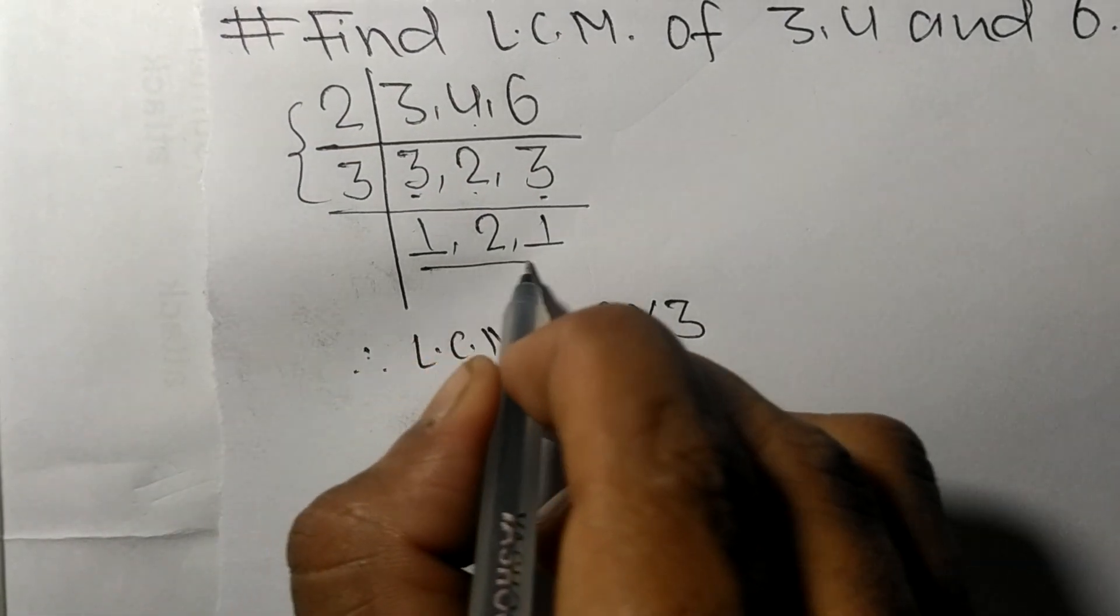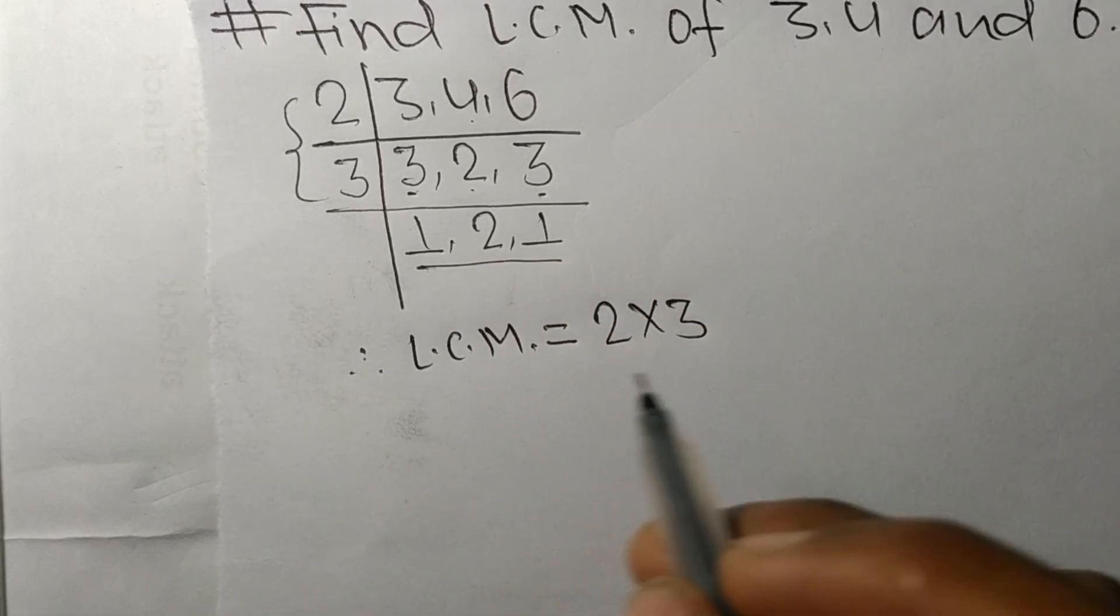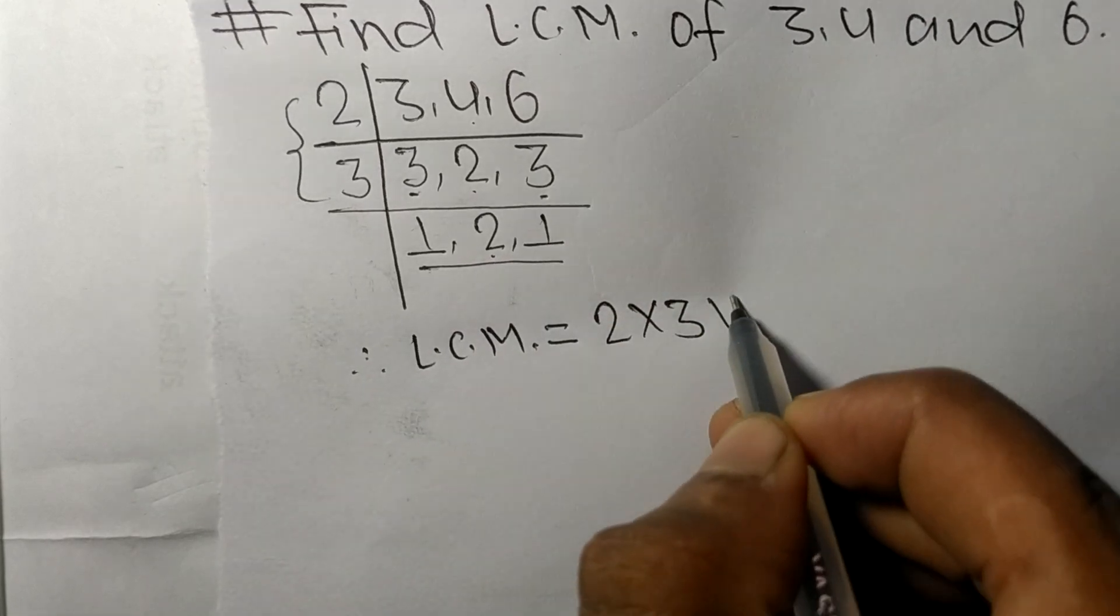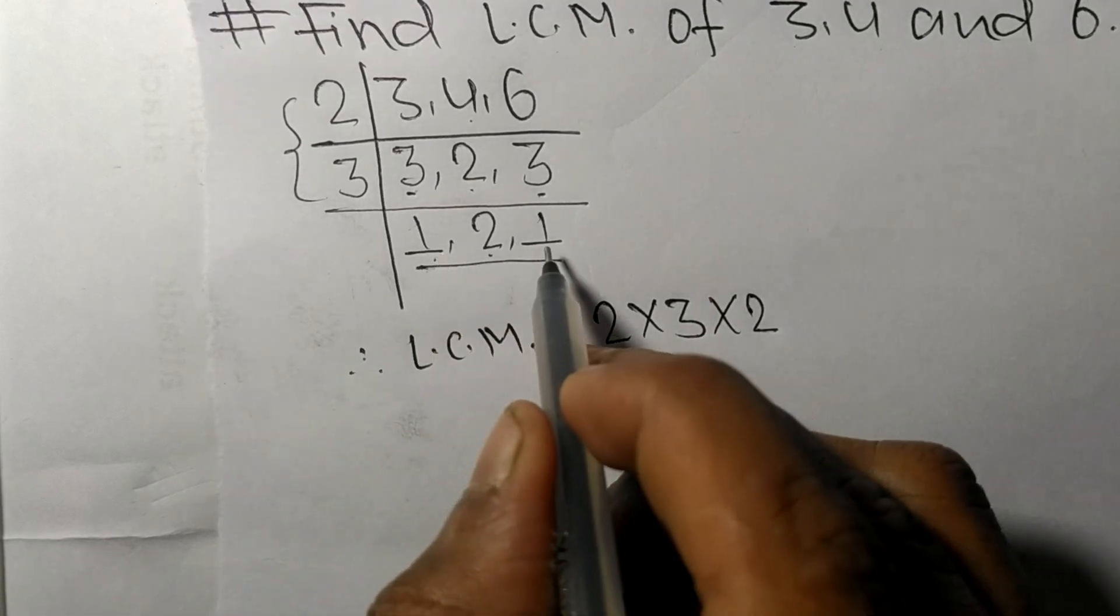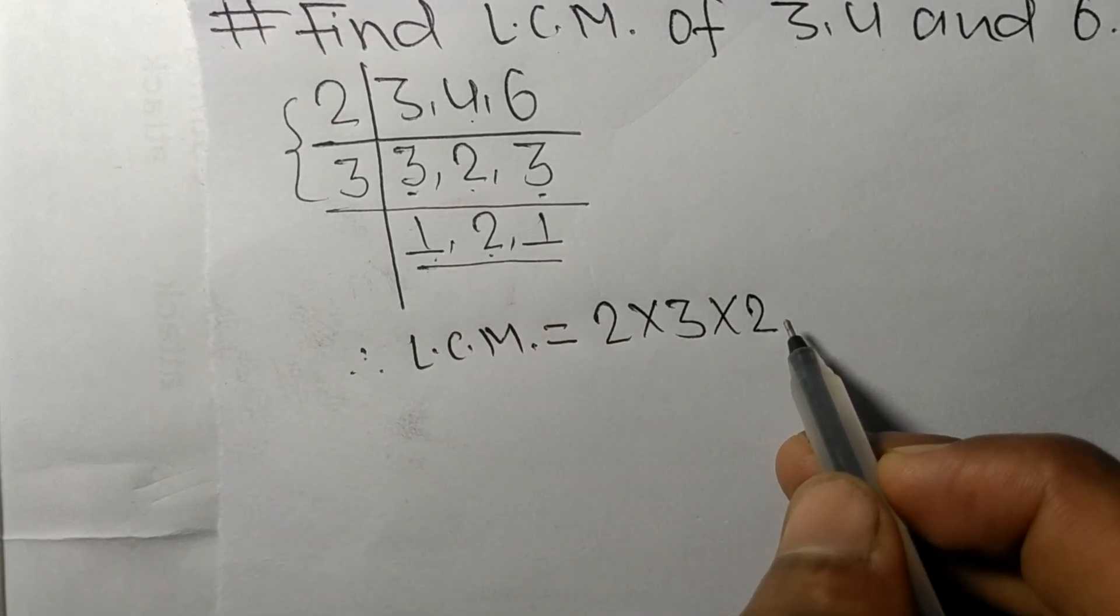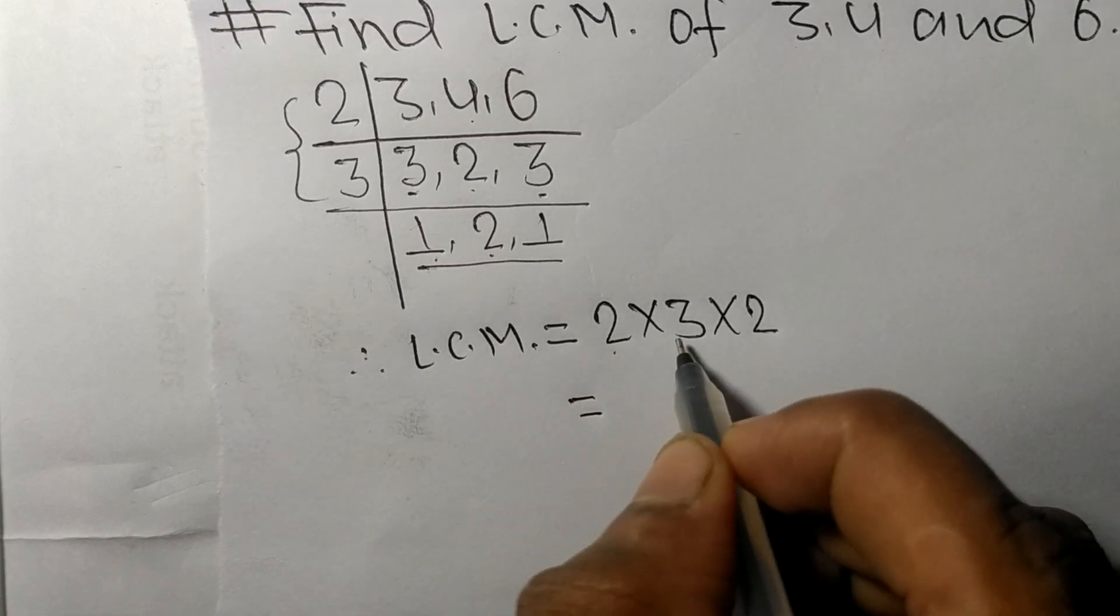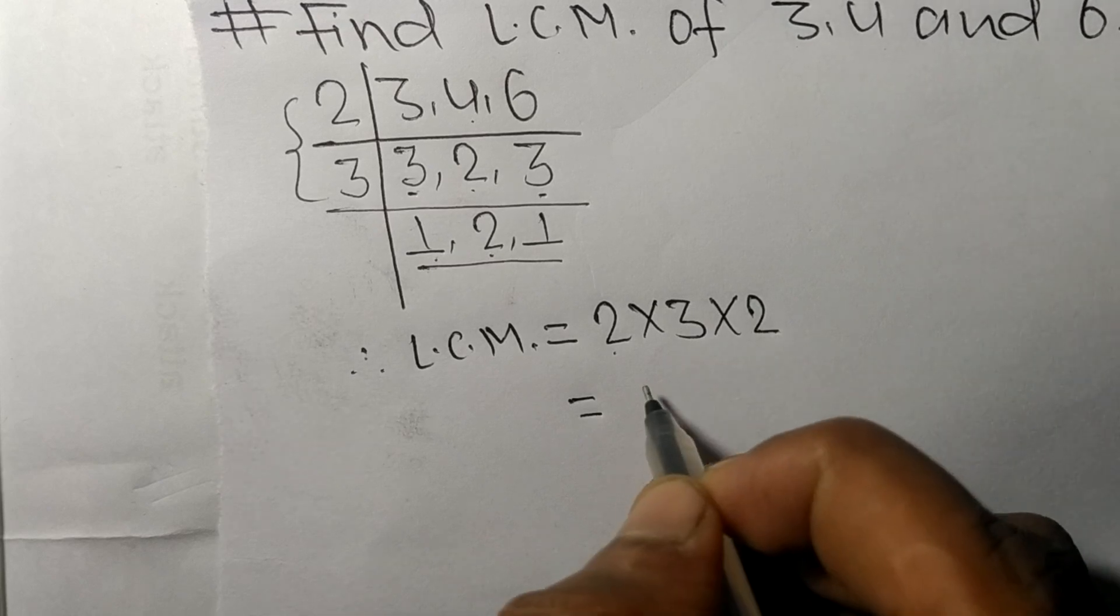3. From here we have to choose the numbers greater than 1, which is 2, and we neglect 1 here because by multiplying with 1 we get the same result. So 2 times 3 means 6, 6 times 2